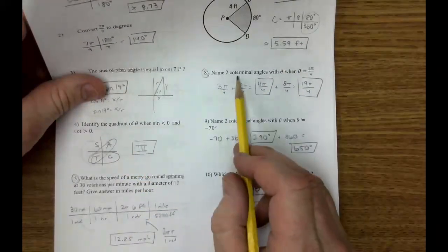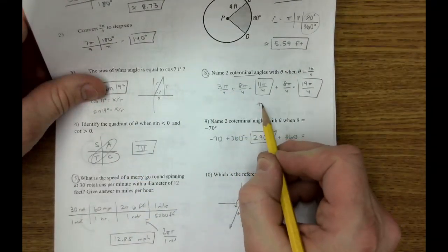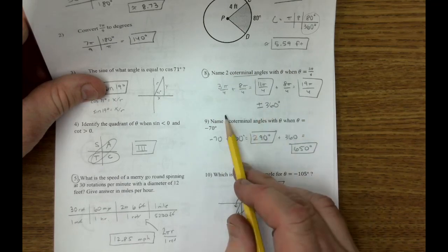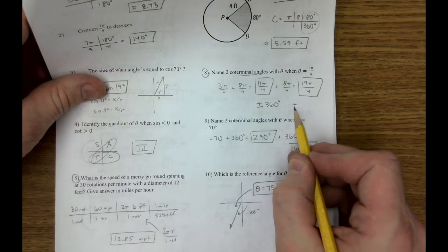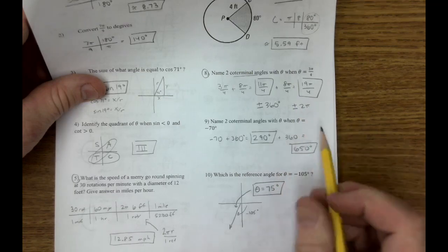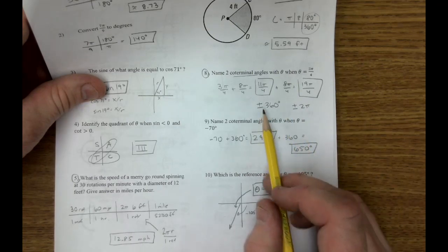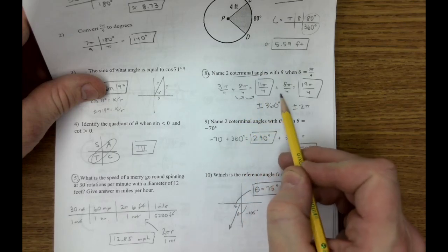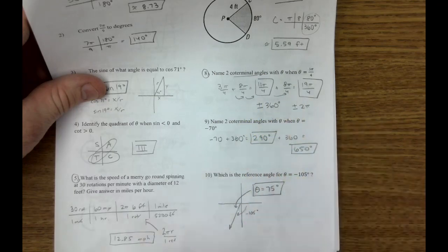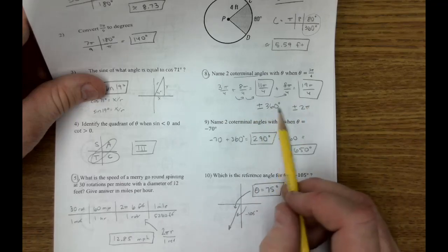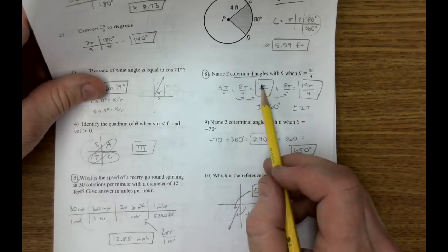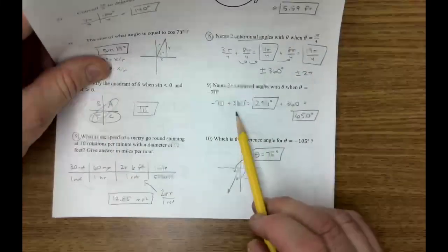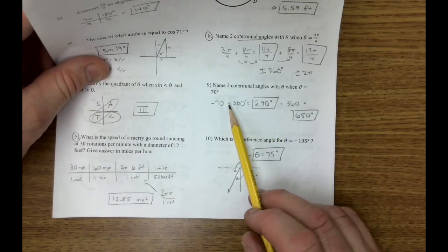On number eight, remember to find coterminal. You add or subtract 360 degrees. Don't forget you can subtract backwards. And you add or subtract 2 pi. Don't forget you can subtract 2 pi. In this case, I made it very simple. I added 2 pi, added 2 pi, added 2 pi again. So just add 2 pi or subtract 2 pi. If you want a negative number, just subtract back. And if you look at number nine, I added, but this very well could have been subtract.